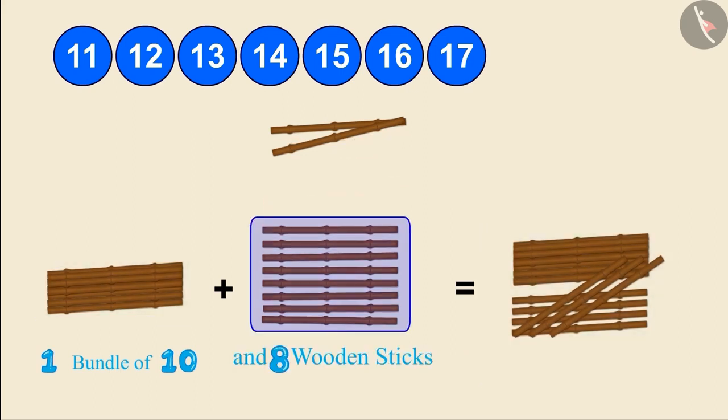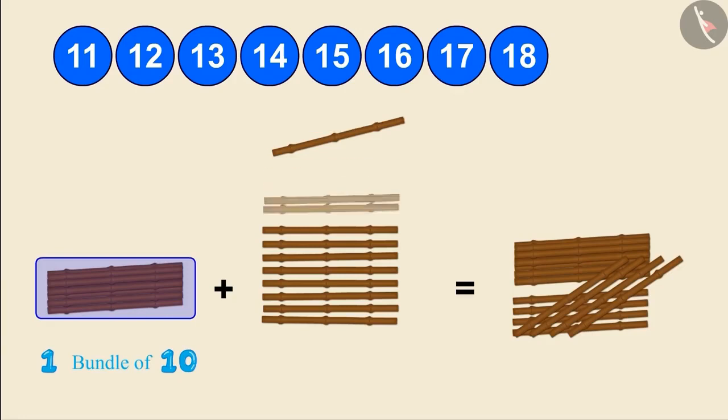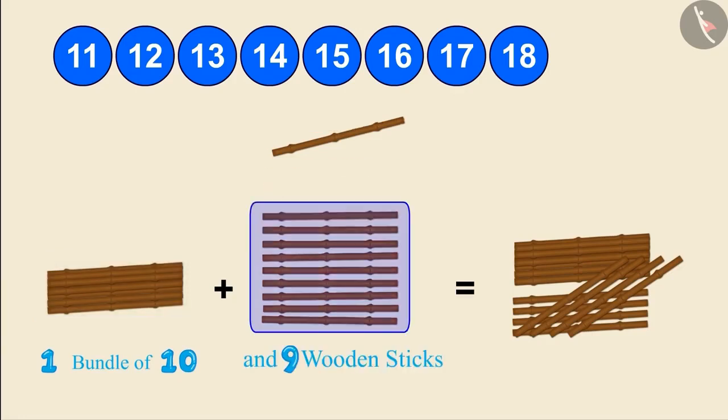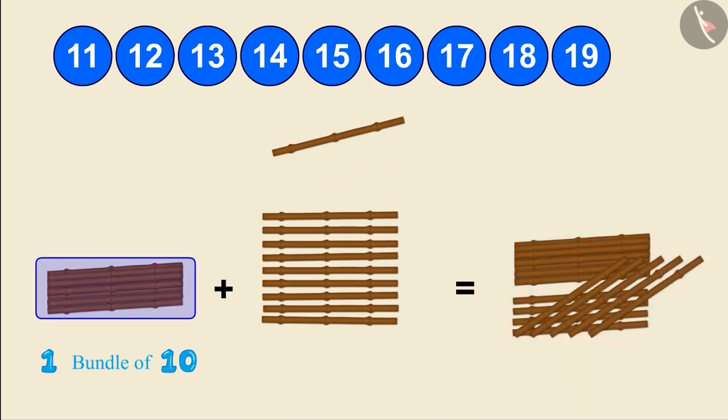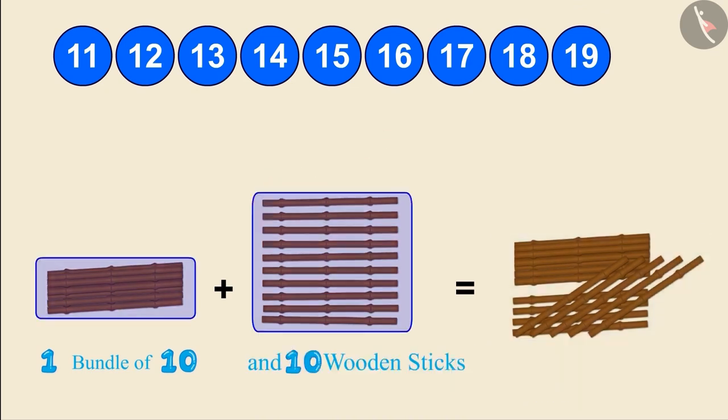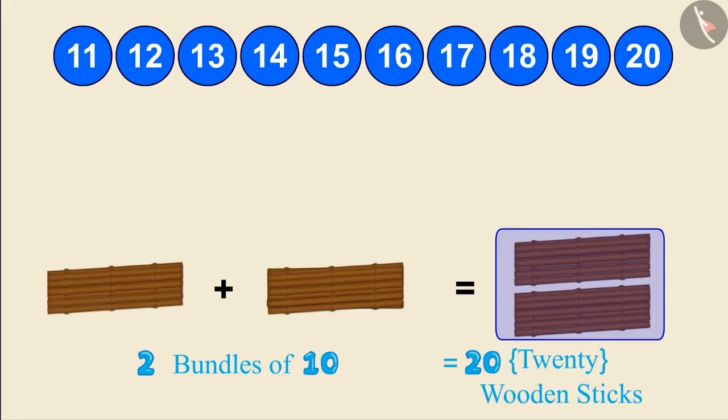One bundle of 10 and 8 wooden sticks make 18 wooden sticks. One bundle of 10 and 9 wooden sticks make 19 wooden sticks. One bundle of 10 and ten more wooden sticks make two bundles of 10, and that makes 20.